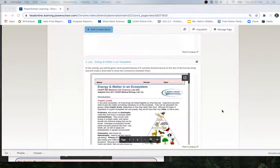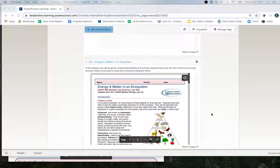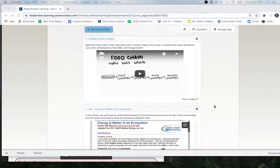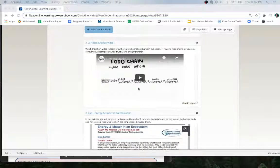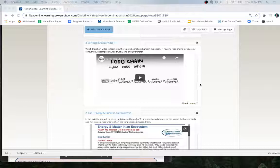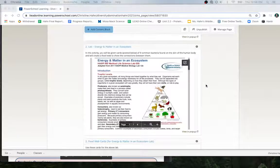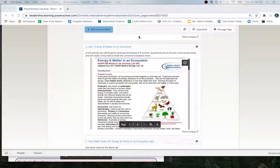Before you start the lab, if you're not that familiar with food webs, food chains, producers, consumers, and energy levels, please watch this cute video called A Million Sharks. It talks about why we don't have a million sharks at the top of the food chain and goes over all the different parts of the food chain. That's a very helpful video to watch before you start the lab.